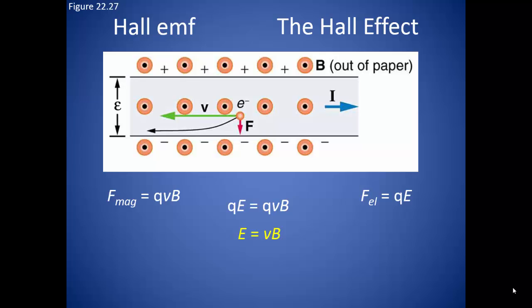Interestingly, the magnitude of the charge cancels, leaving the electric field dependent upon the drift velocity of the charges times the strength of the magnetic field.